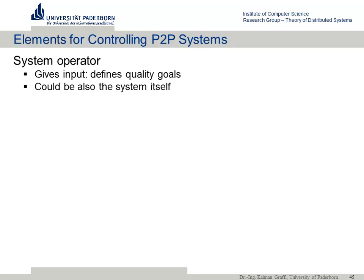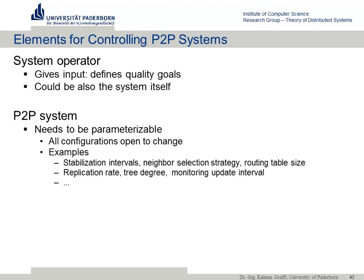In this control scenario, there's an operator — somebody who sets the quality goals. It could be a company like Skype saying: for our application, although it's peer-to-peer, we want the look-up time below one second. Or it could be users who vote and their votes are aggregated. We also need the peer-to-peer system to be parameterizable — all configurations must be open to change. Parameters could include stabilization intervals, fixing fingers in Chord, how you pick neighbors, routing table size, or replication rate. For example, Chord has 5 to 10 configurable parameters that could be changed.